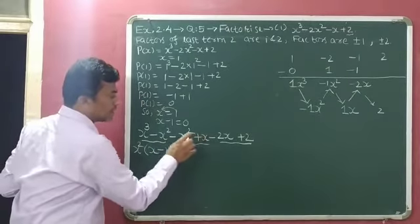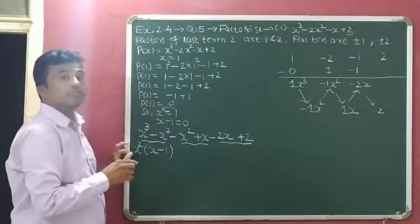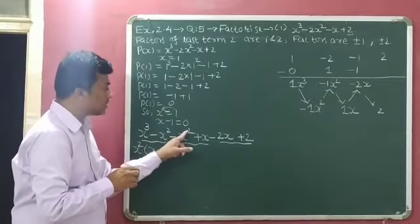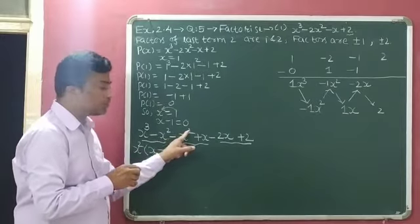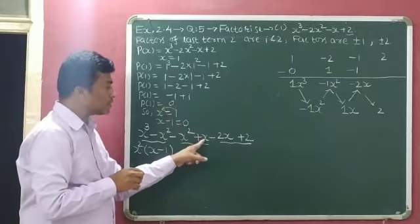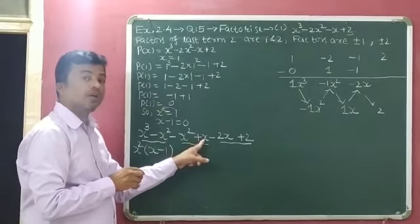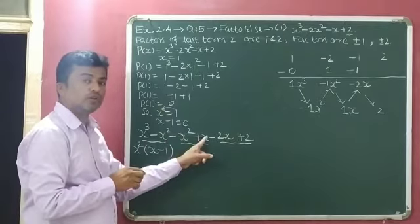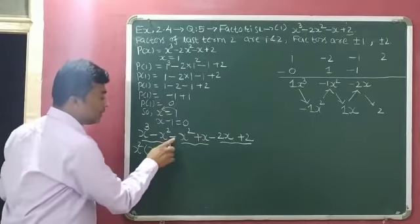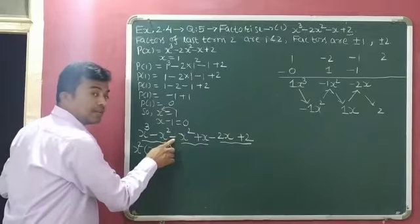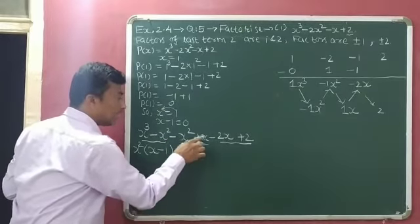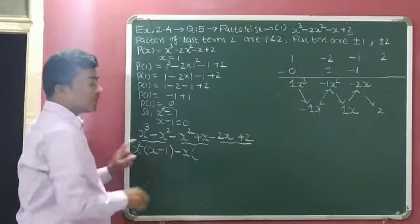Now here see: x square and x — so we take the lowest power outside. Here x raised to 2 and x raised to 1, so the lowest power is x raised to 1. So x we can take outside. And here a minus sign is available, so we can take out minus x.